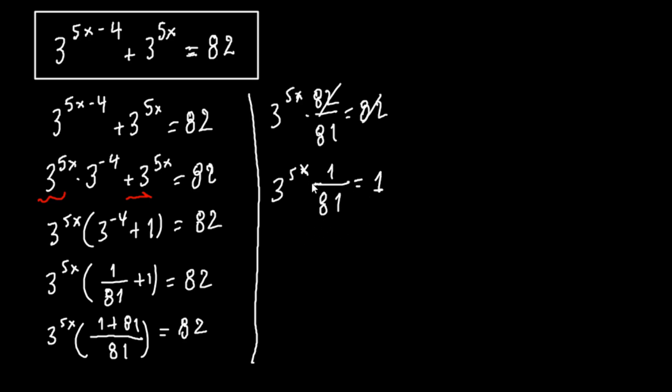We multiply both sides with 81. So we have 3 to the 5x times 81 over 81 equals to 81. This and this is 1. So we have that 3 to the 5x equals to 81.